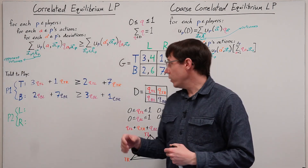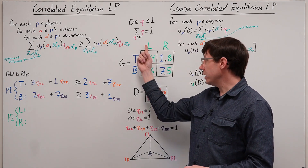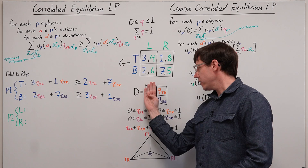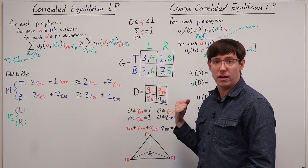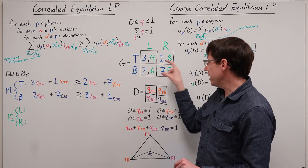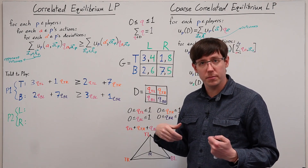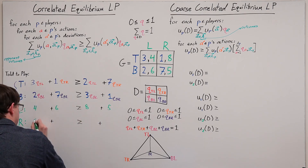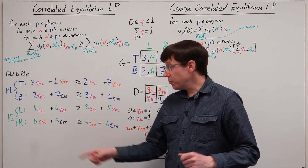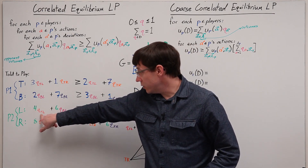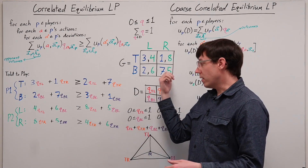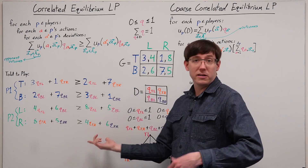Likewise, for player 2, we will have a constraint for when they are told to play L — narrowing the distribution down to those two outcomes — or when they're told to play R, narrowing it to the outcomes in that column. In each case, we compare the expected utility when they play what they're told to the expected utility if they deviate to their other action. If told to play L, the expected utility for L should be at least that of R. If told to play R, the expected utility for R should be at least that of L.